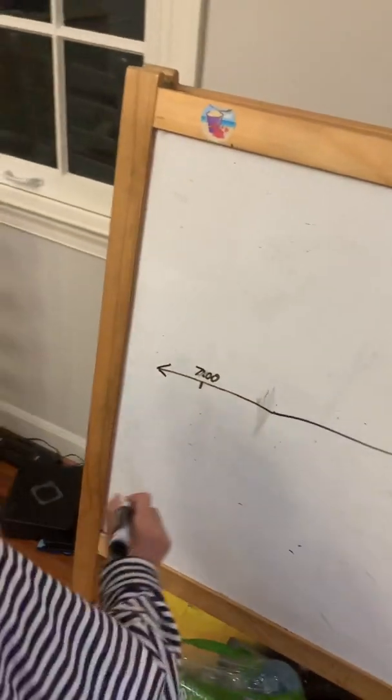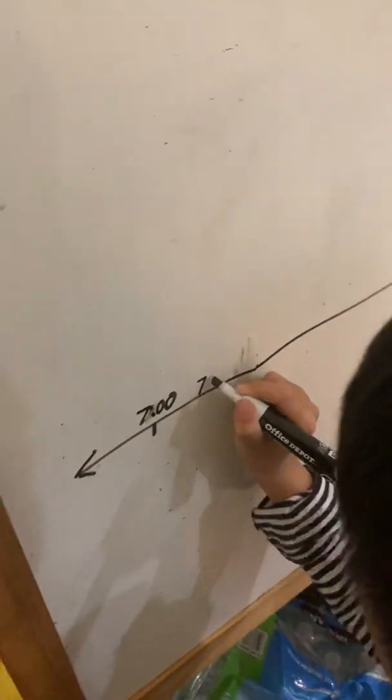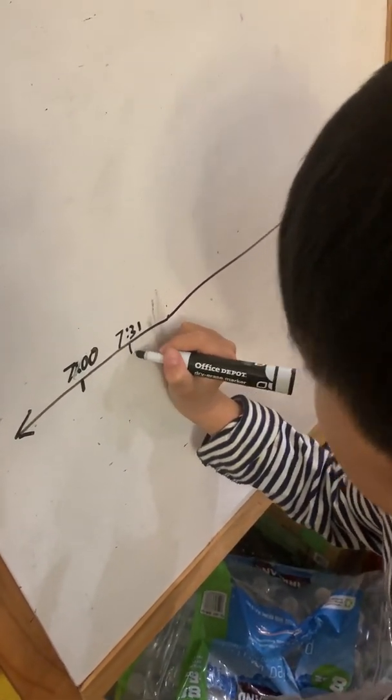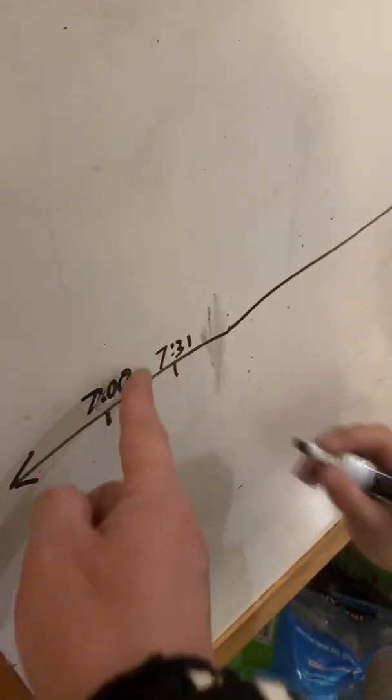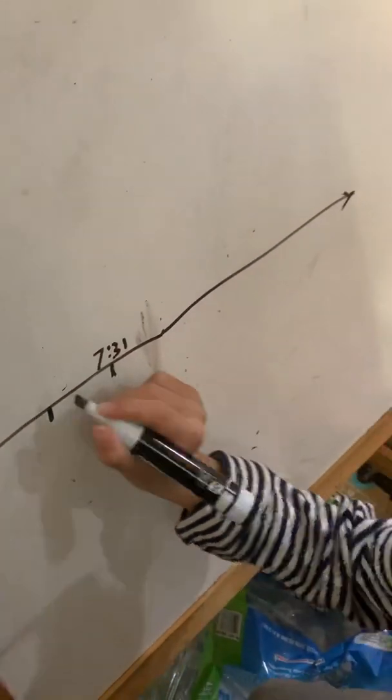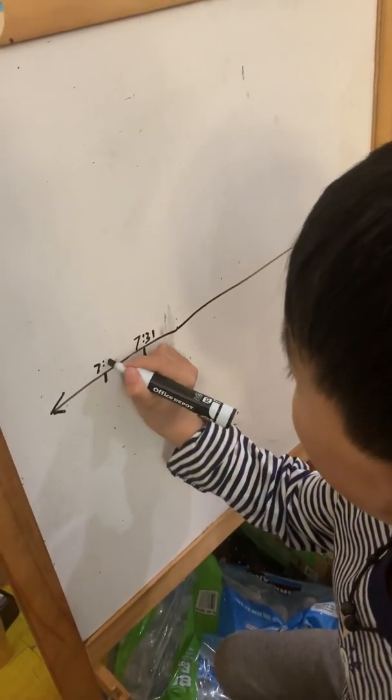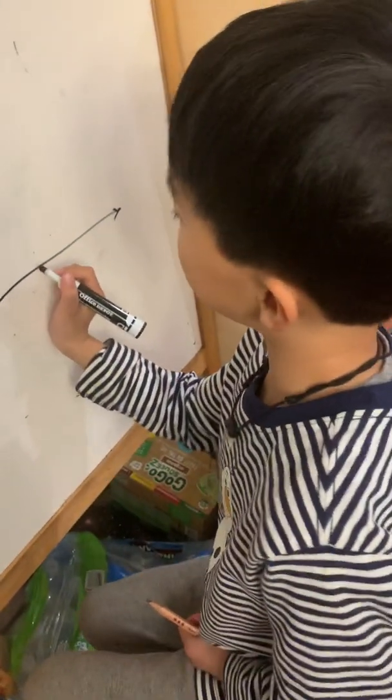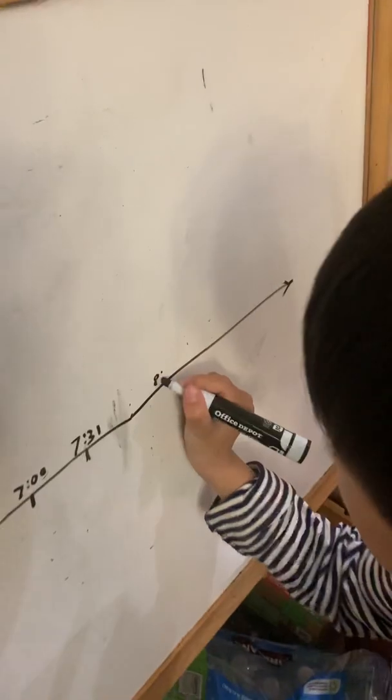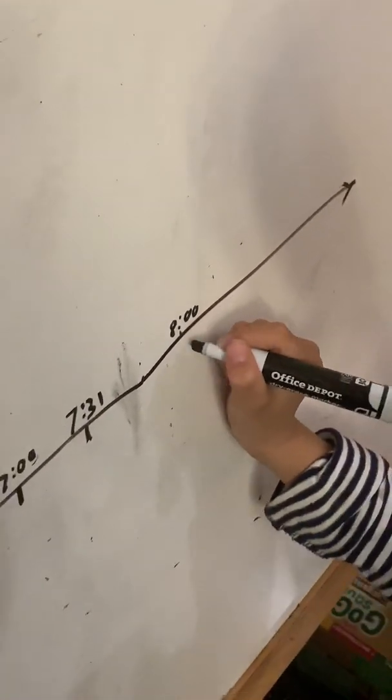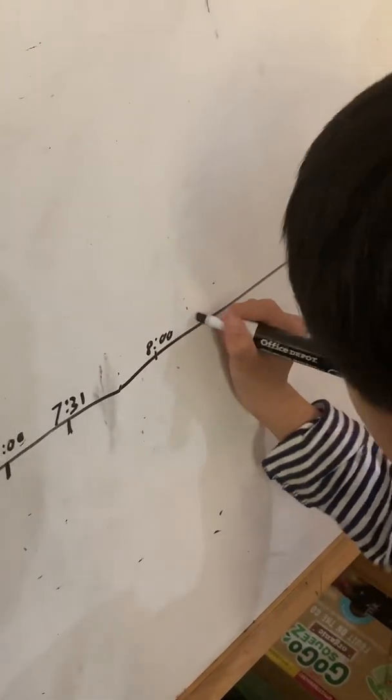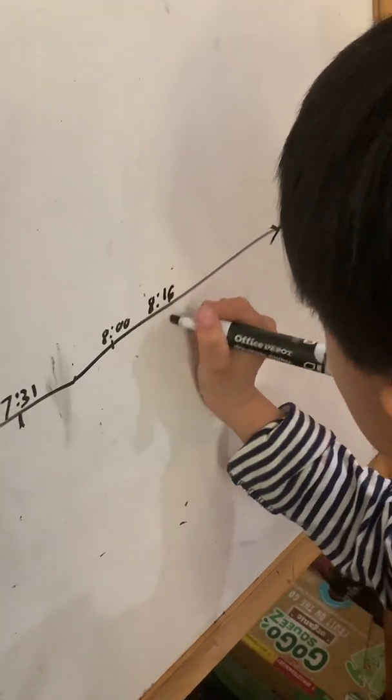An easy way to do that is to go all the way over to 7:31. So here I know it's just an easier option. This is going to be 8:16. This is your time.